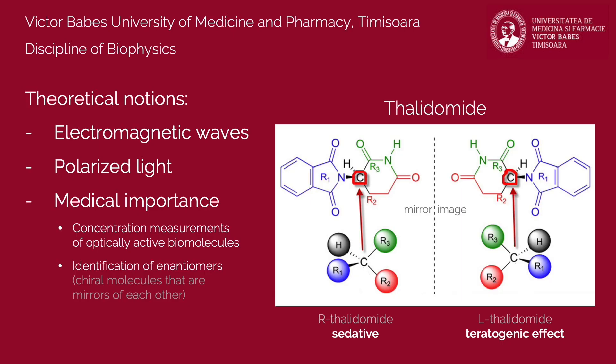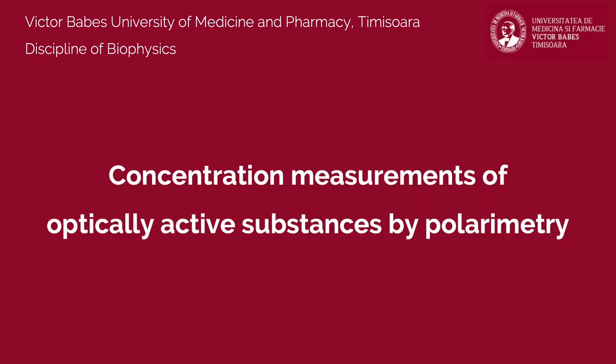Having the same chemical formula, enantiomers cannot be identified using regular biochemical methods. Thus, their analysis is performed using polarimetry. In this work, you'll determine the concentration of some optically active substances using the polarimetric method.